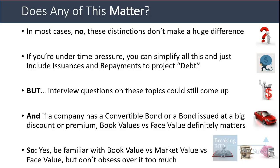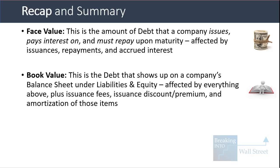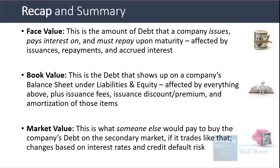To recap: face value is the amount of debt a company issues, pays interest on, and must repay upon maturity — affected by issuances, principal repayments, and accrued or paid-in-kind interest. Book value is the debt on a company's balance sheet under liabilities, additionally affected by issuance fees, the issuance discount or premium, and the amortization of both over time. Market value is what someone else would pay on the secondary market, changing based on interest rates and credit default risk of the issuer.